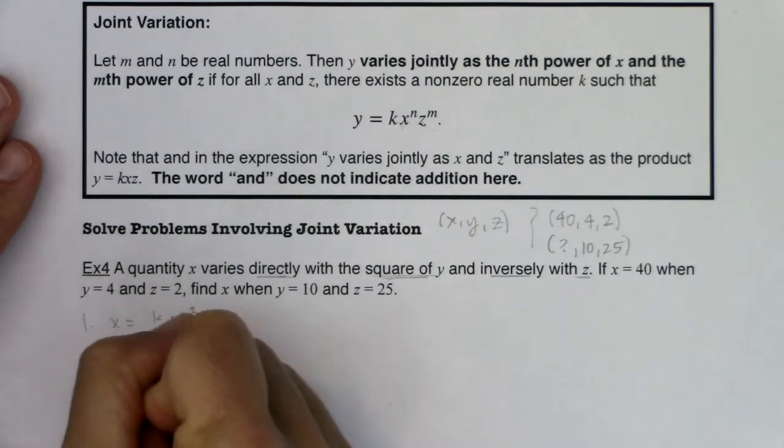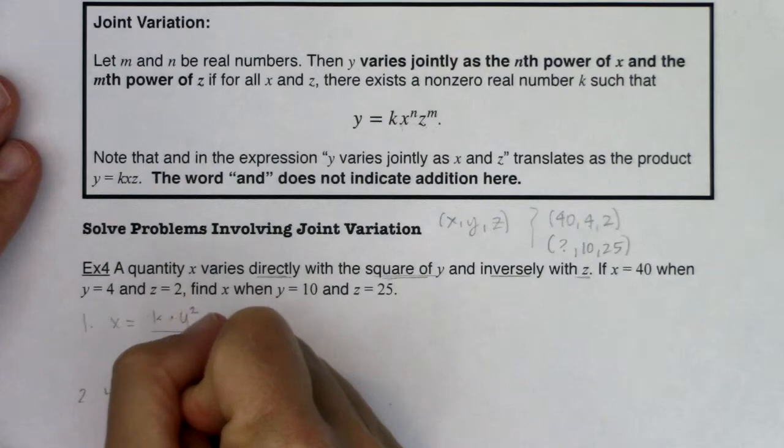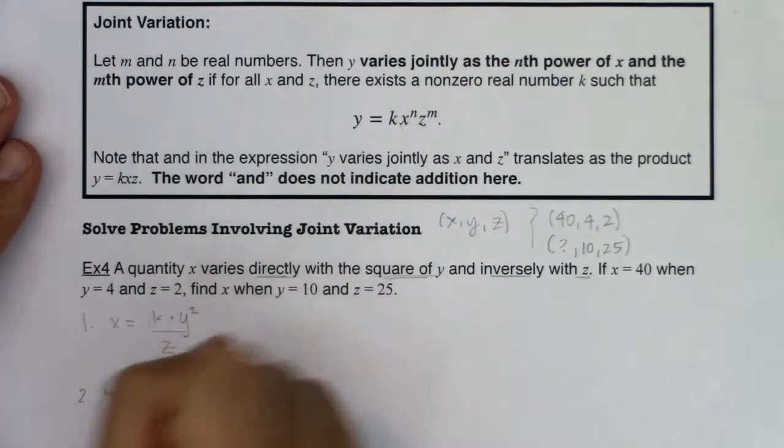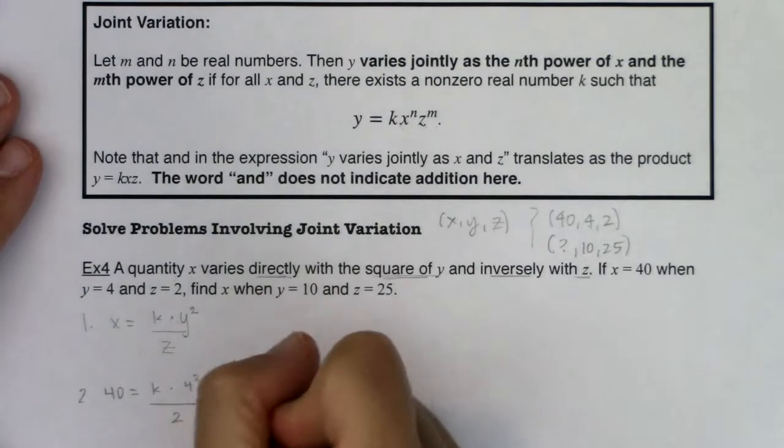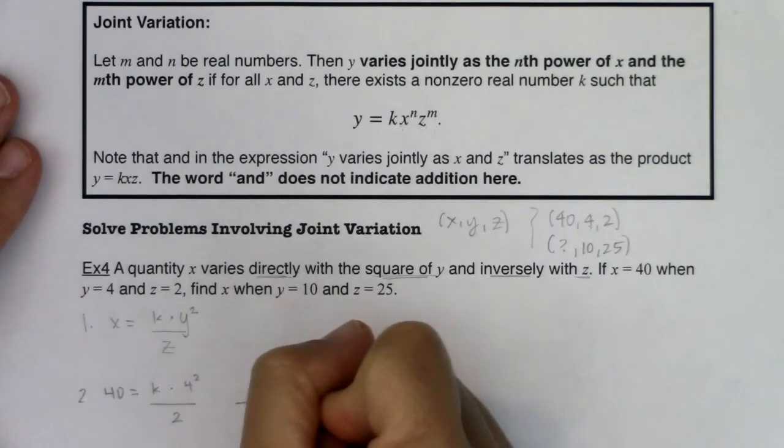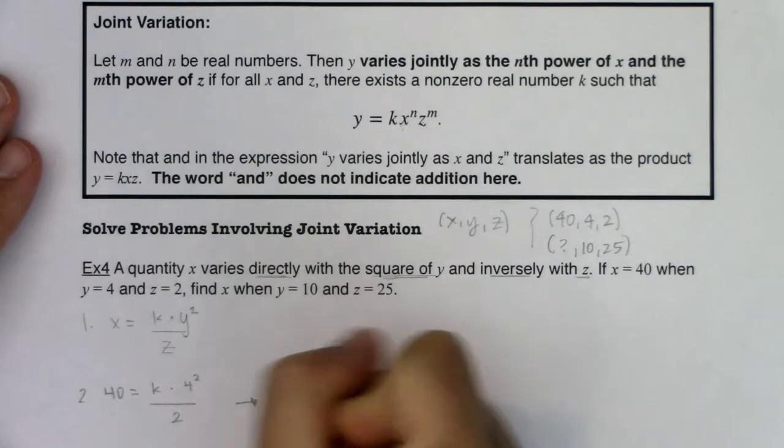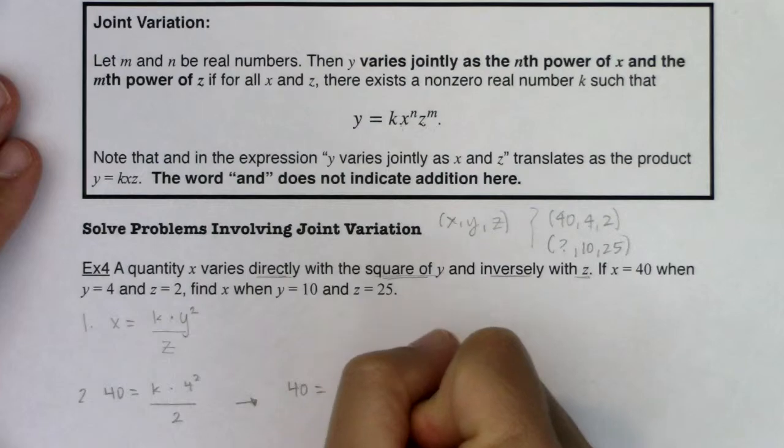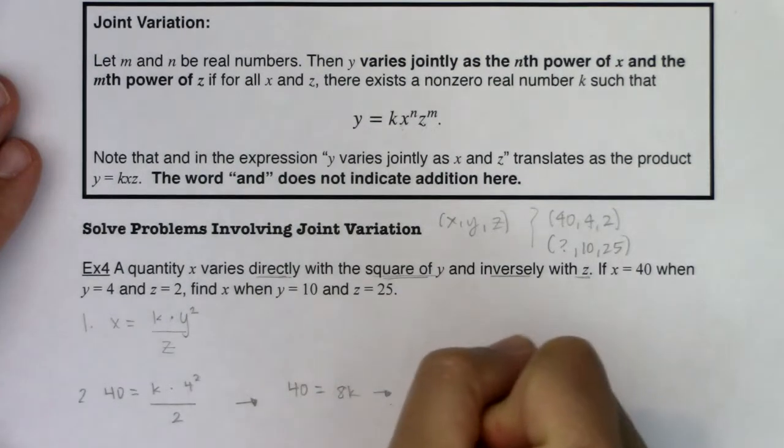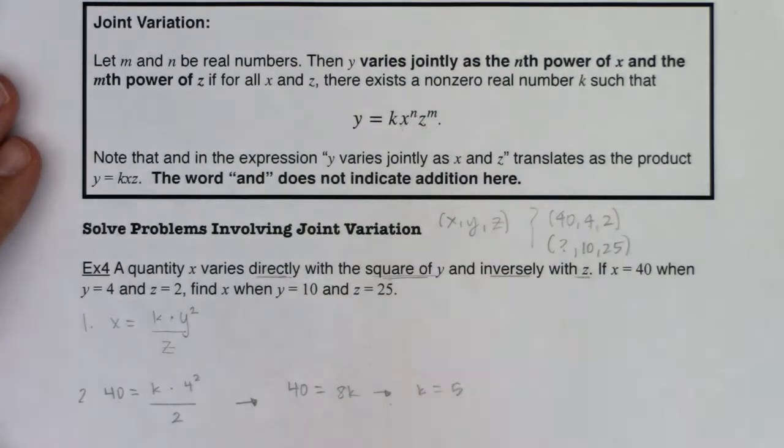So I will get 40 is equal to K times 4 squared over 2. Alright, so as I start to solve this, I am looking at 40 equaling, okay, so 4 squared is 16. 16 divided by 2 is 8. So this is 8K. That's going to tell me K is equal to 5. Alright, so I have my K value.